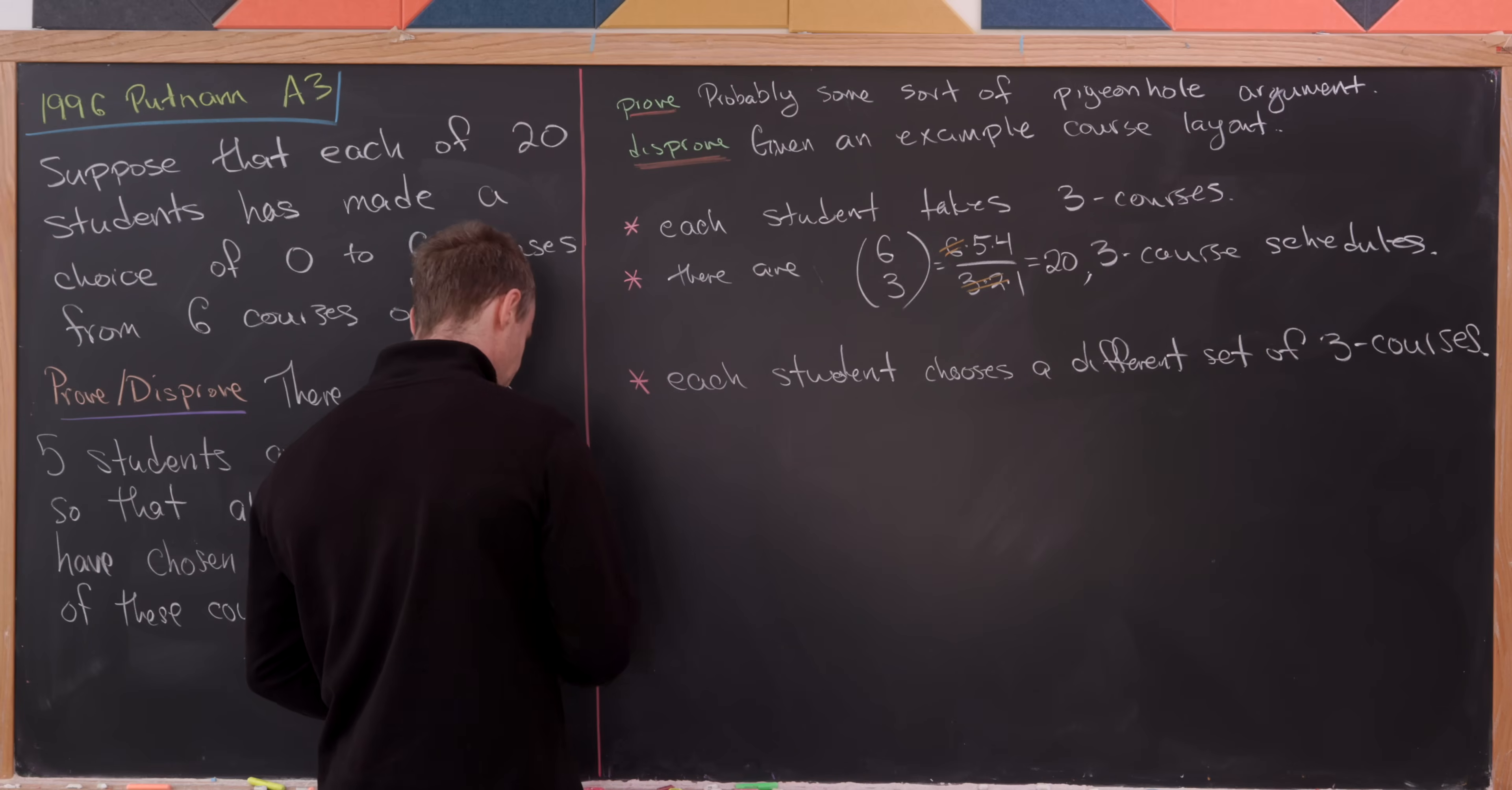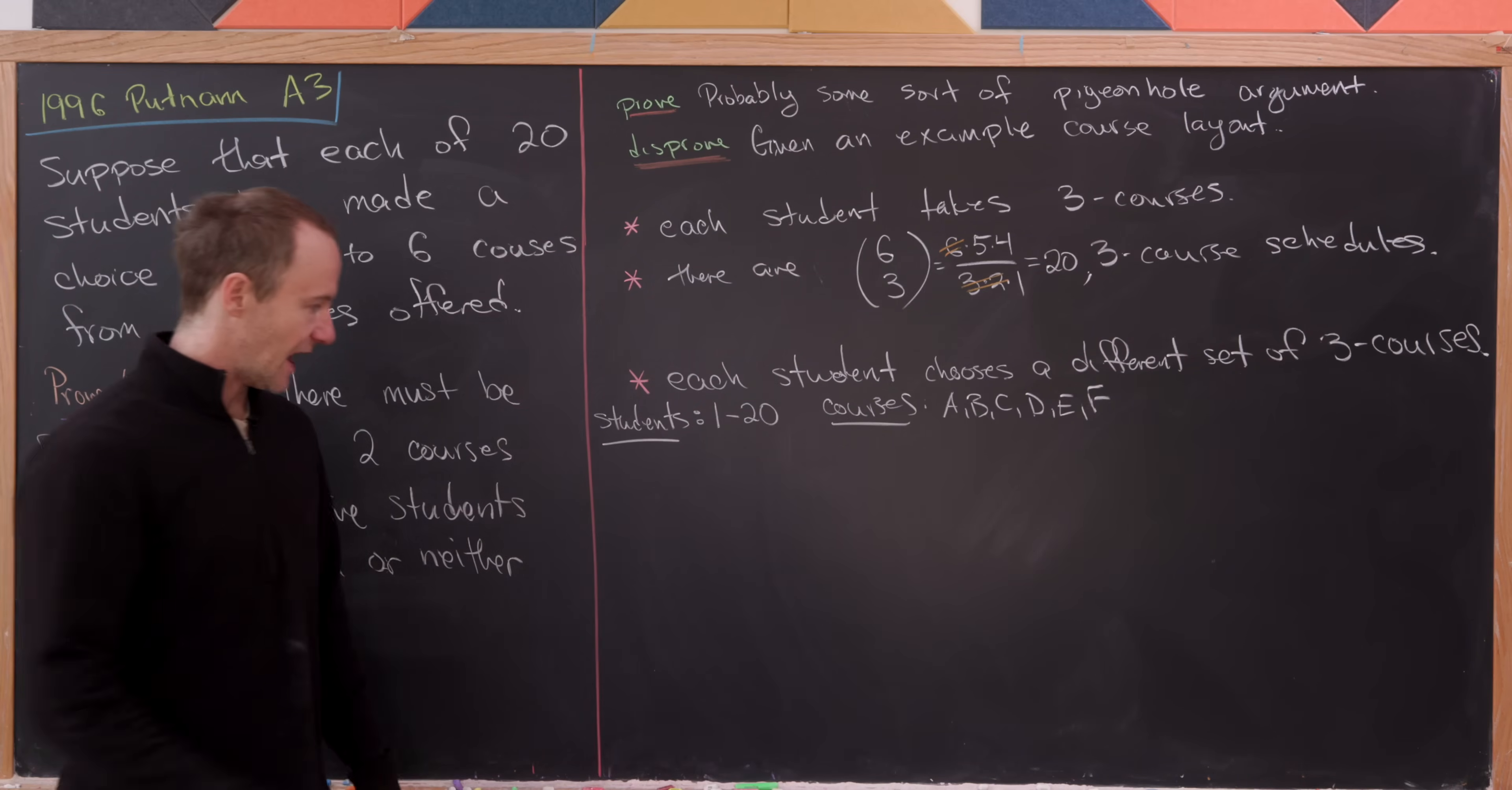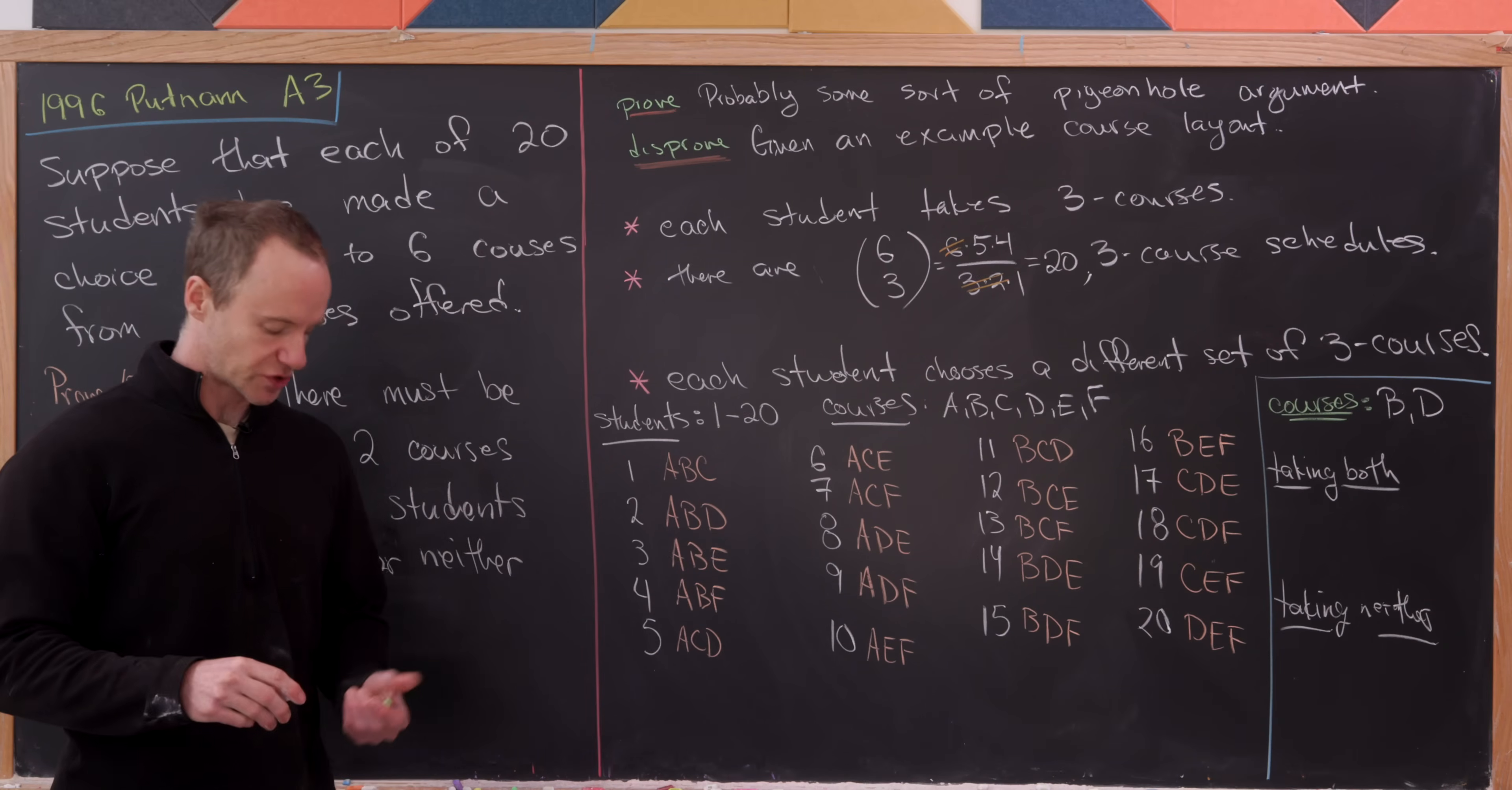So let's maybe say that the students are numbered 1 to 20. And maybe the courses have names A, B, C, D, E, and F. So those are our six courses. And now simply what we can do is build course schedules for each of these students. So 1 through 5 here. And then 6 through 10 here. And then let's jump to having all those course schedules on the board. So there we've got an enumeration of everyone's course schedule.